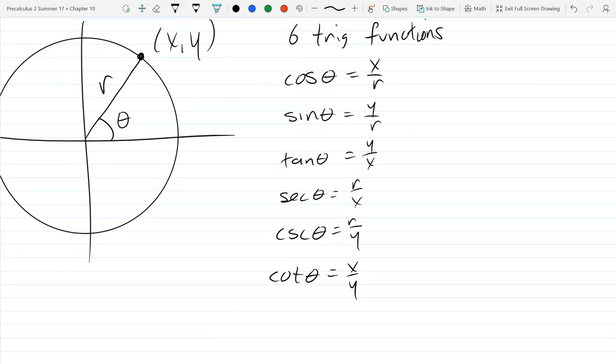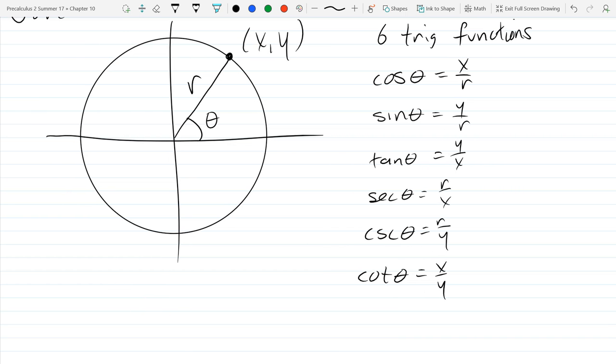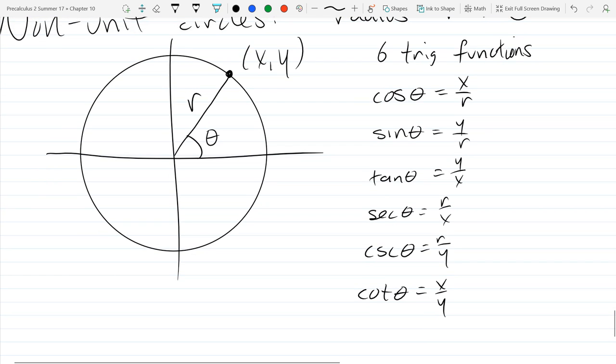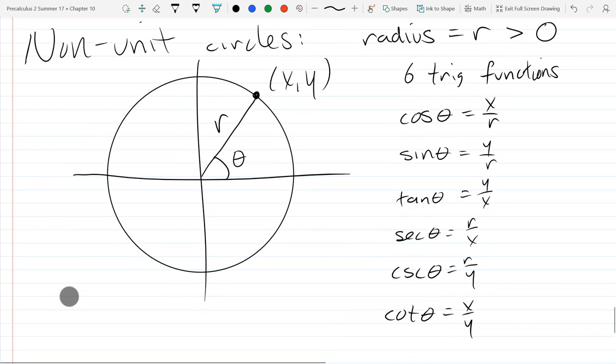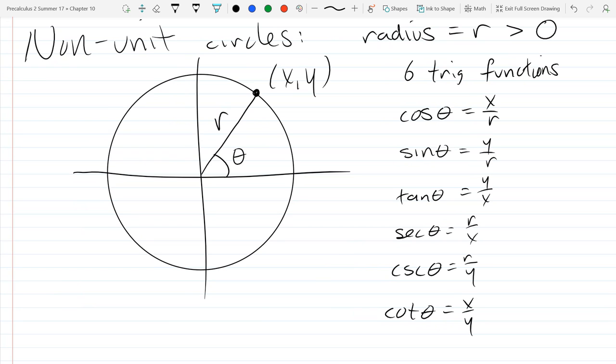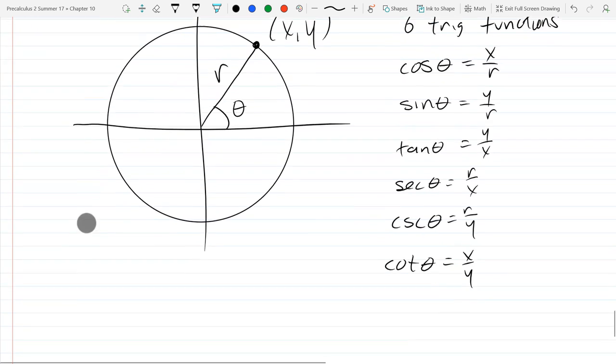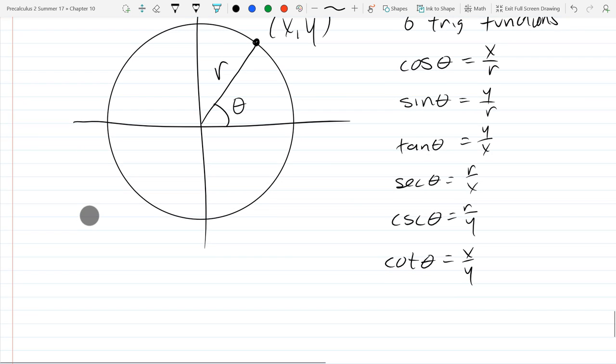So we've got six trig functions, the regular and the reciprocal. They're a little bit strange because you have an r that jumps in for cosine, sine, secant, cosecant. So those four change a little bit. We're not going to do too much on non-unit circles. There'll be some word problems we do later, but we're going to do one example here.